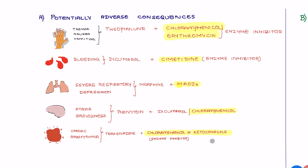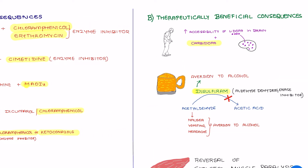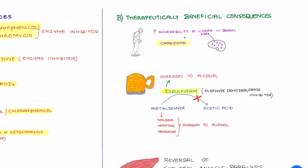When you combine terfenadine with chloramphenicol or ketoconazole, both chloramphenicol and ketoconazole are enzyme inhibitors which increase the plasma levels of terfenadine, leading to cardiac arrhythmias. Please remember terfenadine — it can increase the risk of cardiac arrhythmias. These are the potential adverse consequences when a drug is combined with enzyme inhibitors along with a drug that requires the same enzyme for its metabolism.